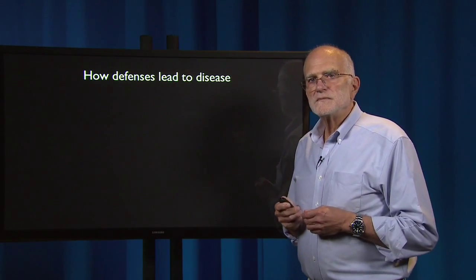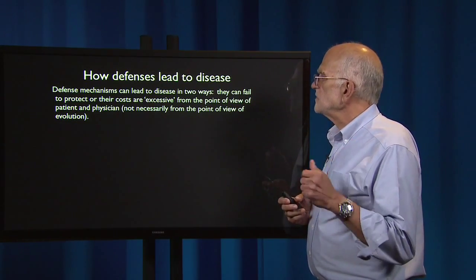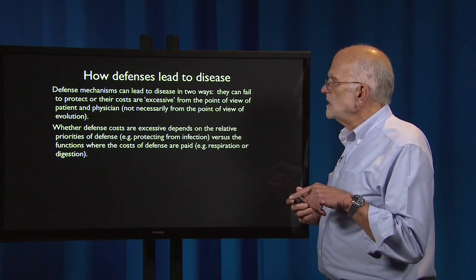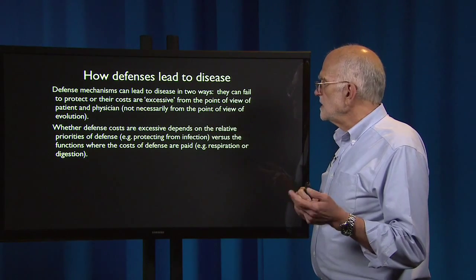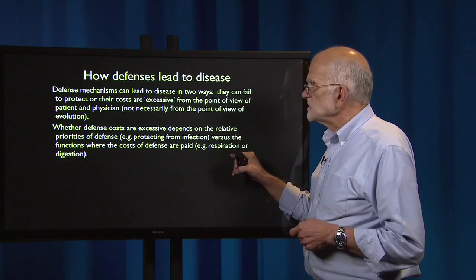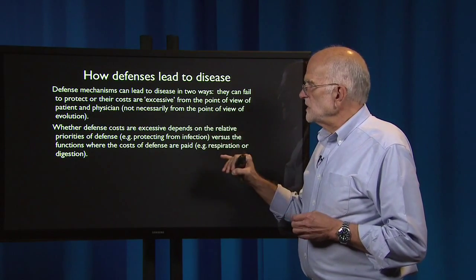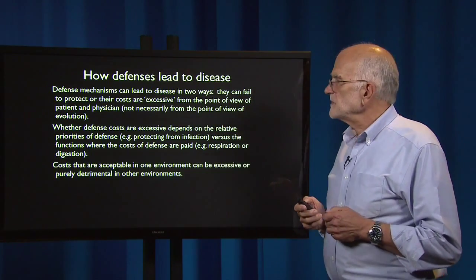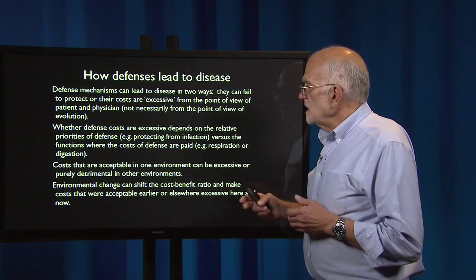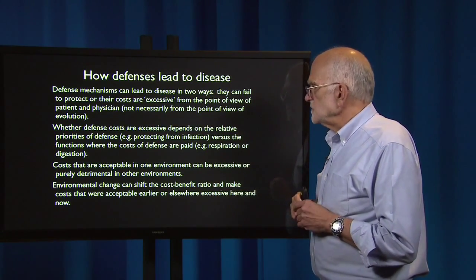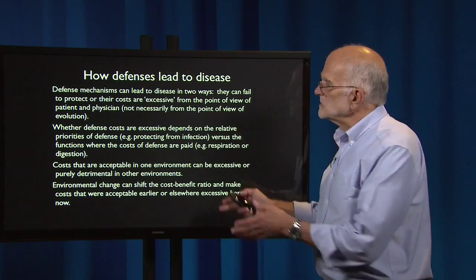How can defenses lead to disease? They can do so in two ways: they can either fail to protect, or their cost can be excessive from the point of view of the patient and the physician — not necessarily from the point of view of evolution. Whether a defense cost is excessive depends on the priorities of defense — protecting from infection — versus the functions where the cost of defense is paid, such as respiration or digestion. A very strong defensive reaction that protects well against infection might disrupt respiration or digestion. Costs that are acceptable in one environment can be excessive or purely detrimental in another. Environmental change can shift the cost-benefit ratio and make previously acceptable costs excessive here and now. This is a mismatch issue.